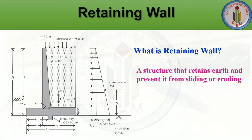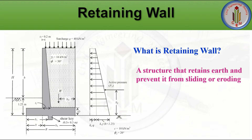Retaining walls are used to hold earth or any other material. They prevent soil from taking its natural position and make the area above and below usable. A structure that retains earth and prevents it from sliding or eroding is called a retaining wall. Retaining walls are used in all types of structures like buildings, bridges, tunnels, culverts, and underpasses.